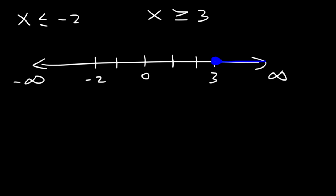So we have a closed circle at 3 shaded towards the right. X is equal to or less than negative 2 so we have a closed circle shaded towards left. So therefore the solution is negative infinity to negative 2 with a bracket union 3 to infinity.